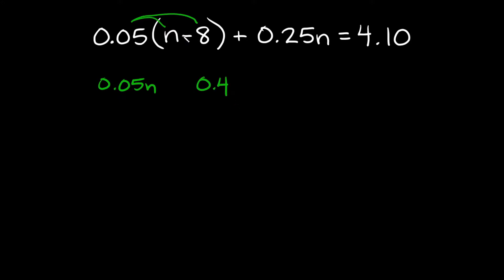Since we're subtracting right here you would just bring that subtraction straight down. And then bringing down the rest of our problem we have plus 0.25n is equal to 4.10.